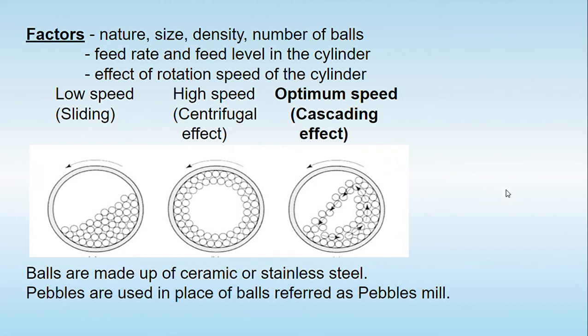As shown in this slide, if the balls are rotated at a lower speed, the balls remain on one side and we observe a sliding effect with no proper size reduction. If the cylinder is rotated at a higher speed, centrifugal force is generated and the balls are thrown towards the periphery, leaving a hollow portion in the center. In both cases — low speed and high speed — proper size reduction will not take place.